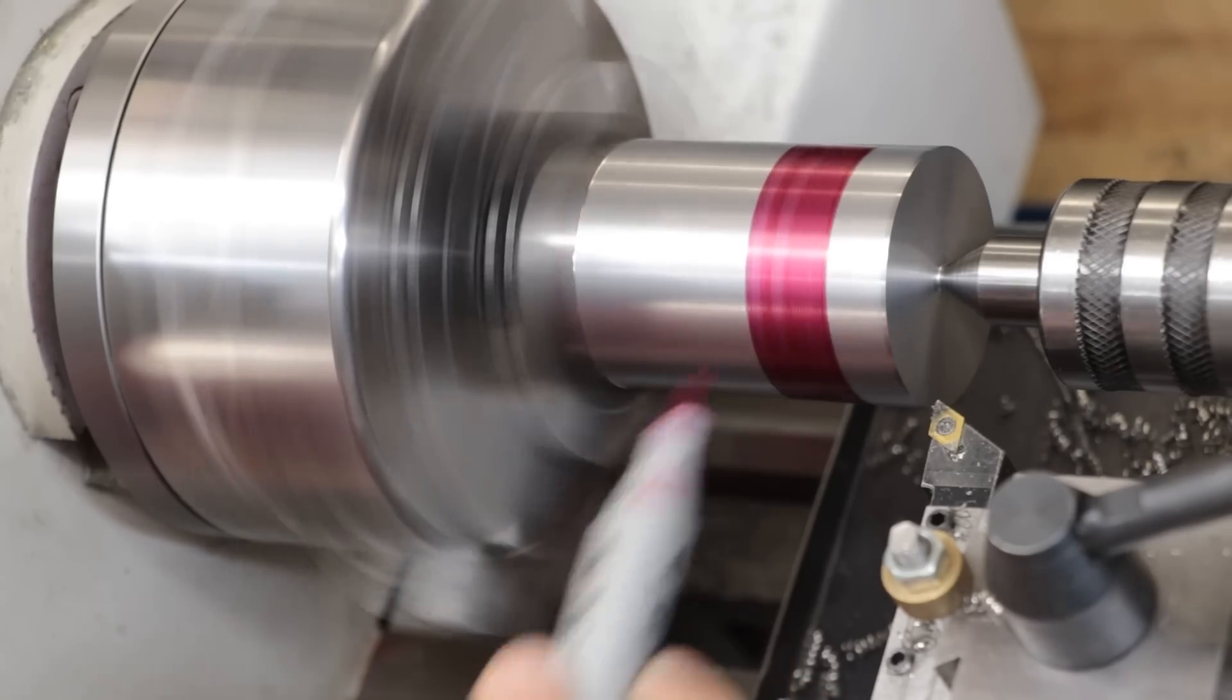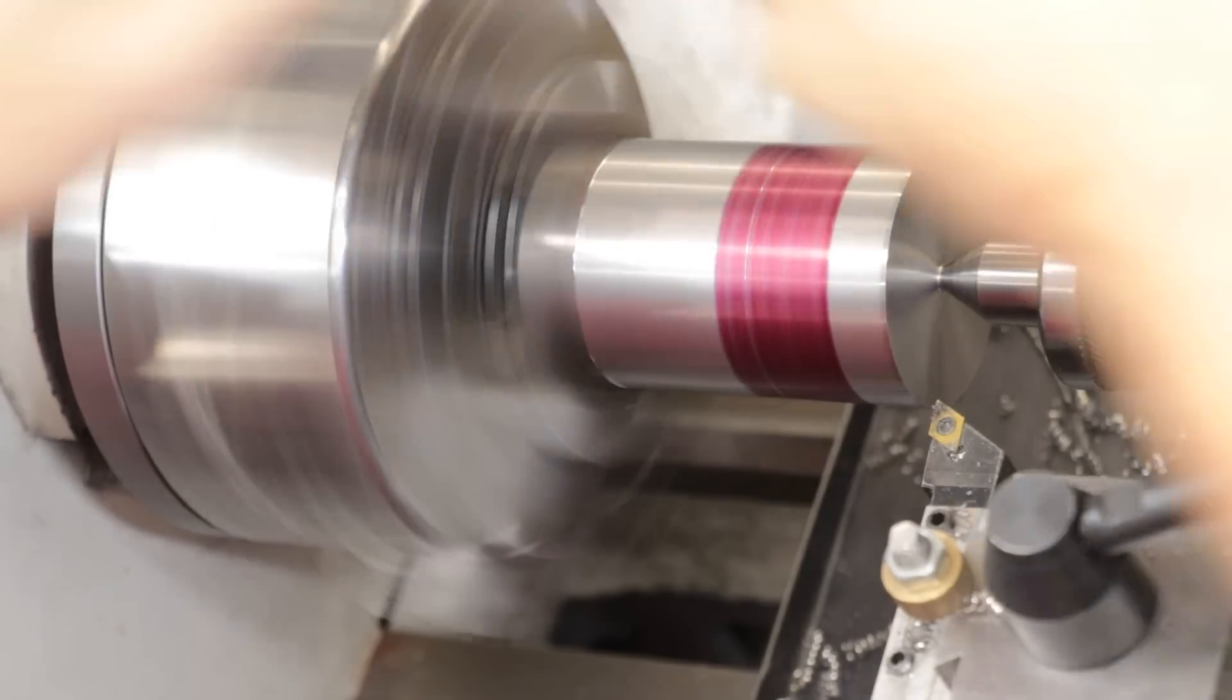So with the part first cleaned up, we'll first machine in the shank of the tool, and we have about 30mm to come off the diameter.